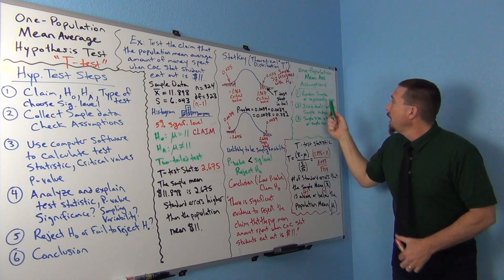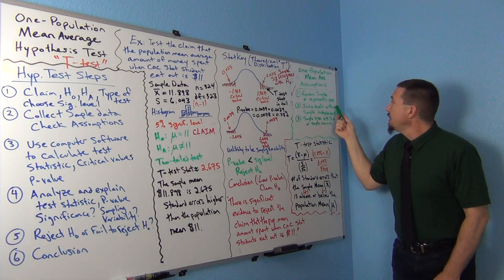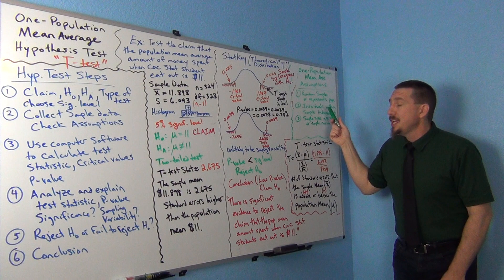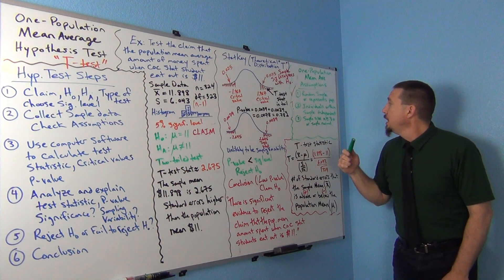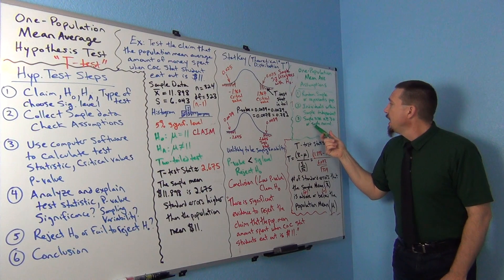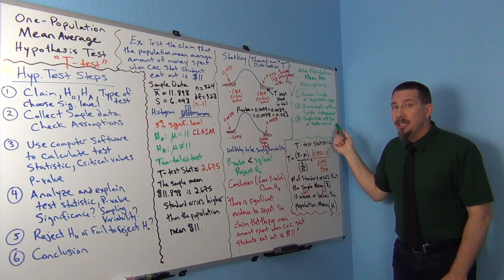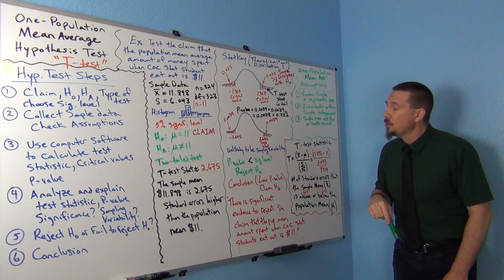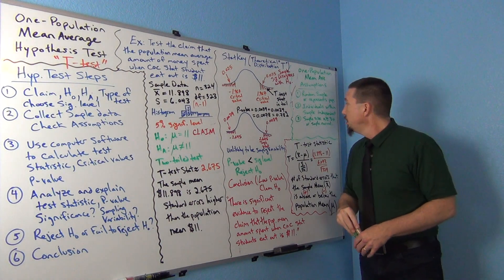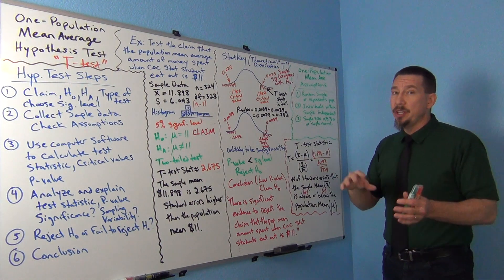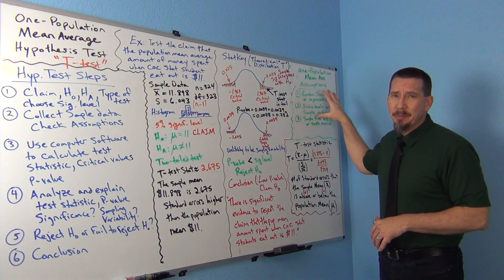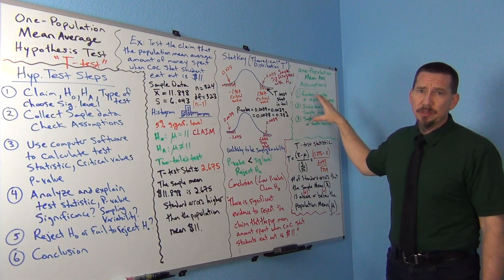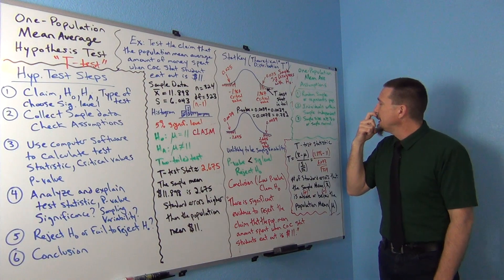The one population mean average assumptions: random sample or representative of the population. Individuals within the sample, individual observations should be independent of each other. And sample size should be at least 30, 30 or higher, or the sample should be normal. The classic 30 or normal requirement. These are all the same requirements that we talked about when we did confidence intervals. Really the same ideas.